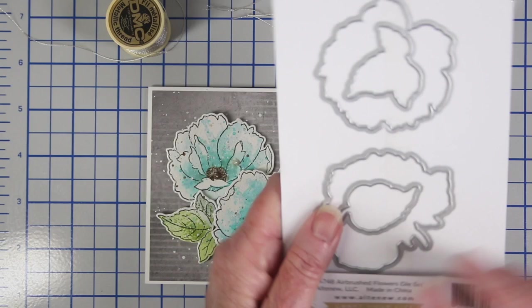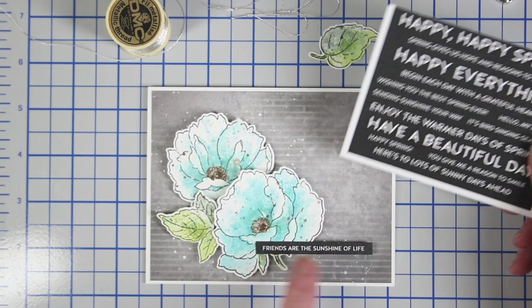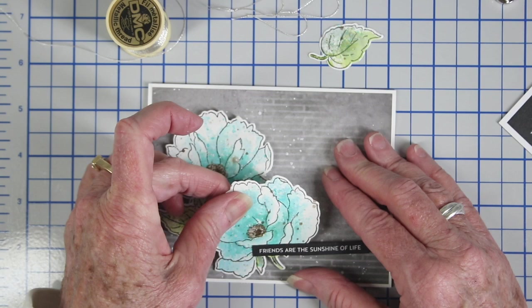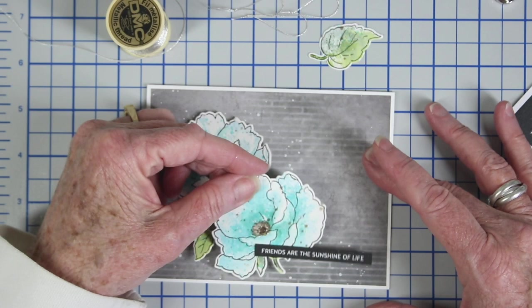And off-camera, I've used the coordinating dies to die cut all the flowers and the leaves, and I'm also using a Simon Says Stamp sentiment strip for my message. I have added a little bit of foam tape to the back of my flowers and my sentiment strip to get them a little bit of lift and dimension. And now I can just place these where I want them on my card.